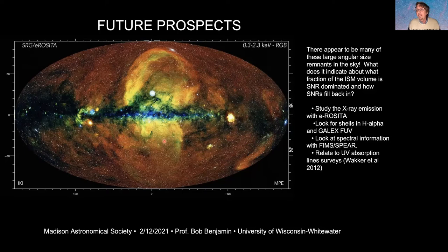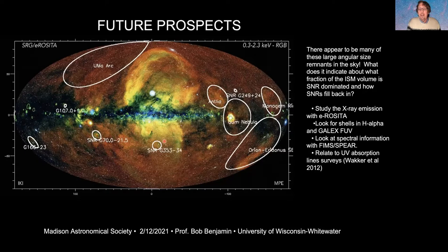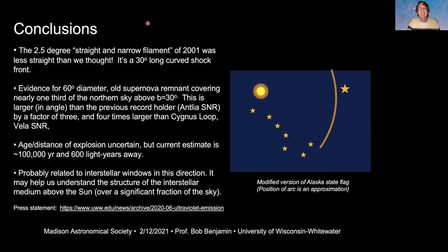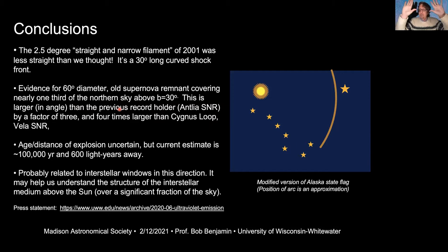Someday I'll be able to look at these things in higher-resolution X-rays and see evidence of hot gas, because this eROSITA X-ray survey is far better than the late-1990s ROSAT data. I waited 20 years for the first part of this story. To summarize: that two-degree straight narrow filament was actually less straight than we thought — it's a 30-degree long curved shock front indicating a 60-degree diameter old supernova remnant covering a large part of the sky.